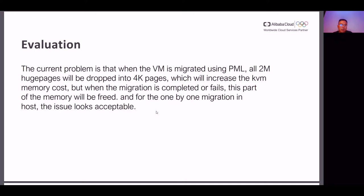The current problem is that when the VM is migrated using PML, the 2M huge page will be dropped into the 4K page, which will increase the KVM memory cost. But when the migration is completed or failed, this part of the memory will be freed. And for one-by-one migration in host, the issue looks acceptable. Thank you.